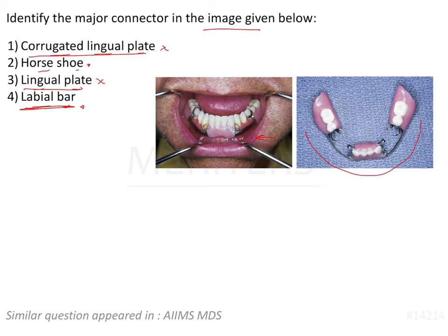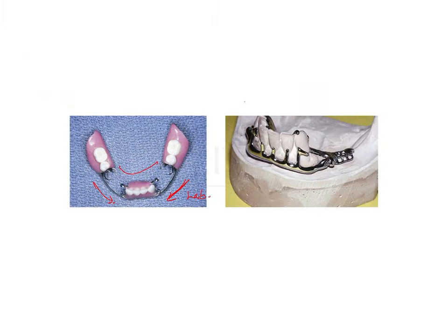Labial bar is not commonly given — that is something we need to know. A modification of labial bar is called the swing lock design. The swing lock design has a hinge that locks the denture in place, like a lock and key, so you can clip the denture in and make sure that periodontally weak anterior teeth are not taking up a lot of load. That is the advantage of the swing lock design.